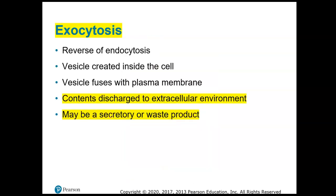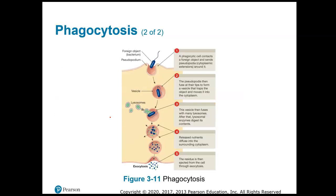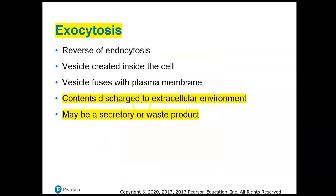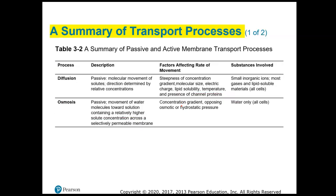Exocytosis is when material is released into the extracellular environment through a vesicle. In phagocytosis, after the cell takes in the bacterium and breaks it down, the broken-down bacterial material and lysosomal enzymes remain in the vesicle as waste. That vesicle fuses with the plasma membrane and all its contents are released out of the cell — that's exocytosis, also called secretion.